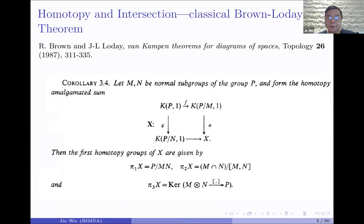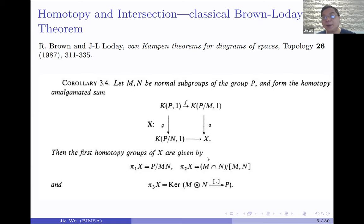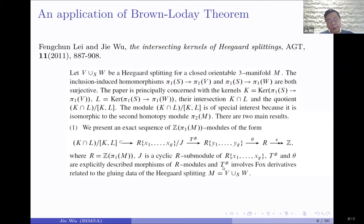Historically this goes back many years. Ronnie Brown tried to understand what is going on for the second homotopy group in terms of group theory. You look at some normal subgroups of group G, take K-prime-one, take the homotopy pushout, and ask what happens for the second homotopy group. Then people asked what happens for higher homotopy groups, and the second homotopy group is related to intersections and commutator stuff.